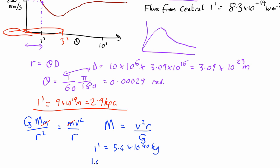At 10 arcminutes the velocity is also about 200 km per second, but now r has gone up by a factor of 10, so the enclosed mass is 5.4 times 10 to the 41 kilograms — even more mass.